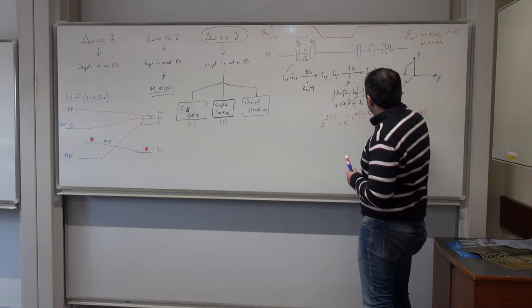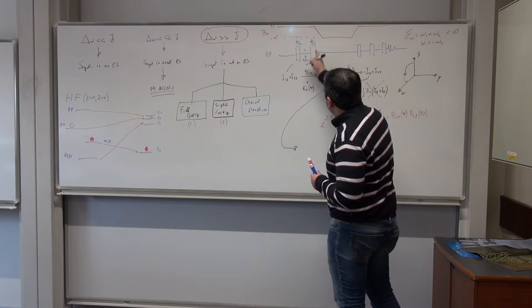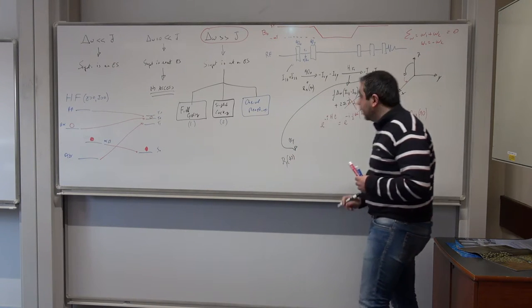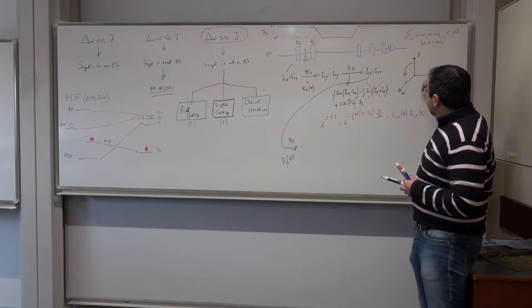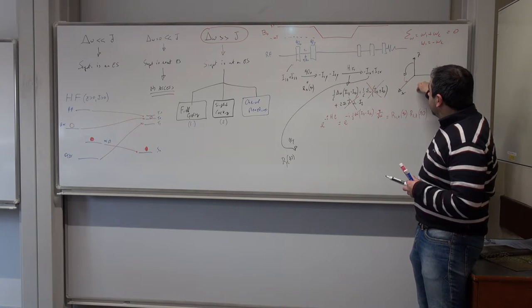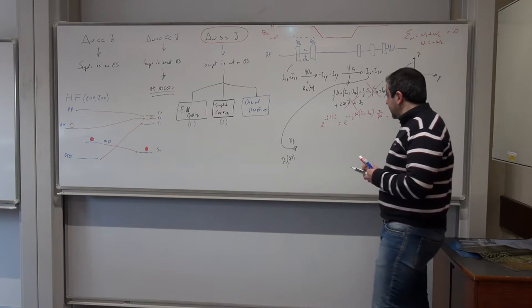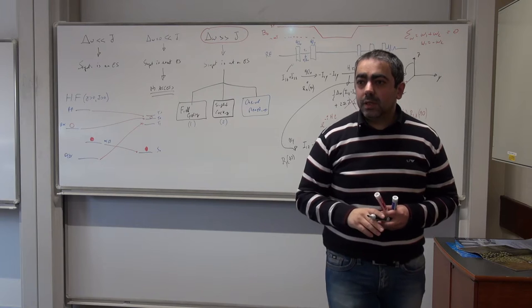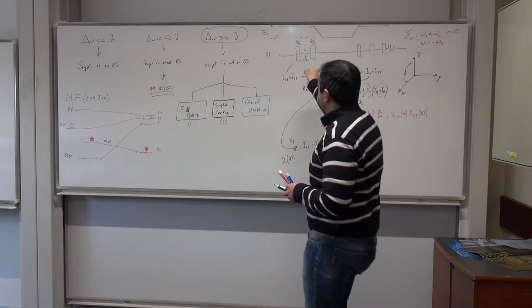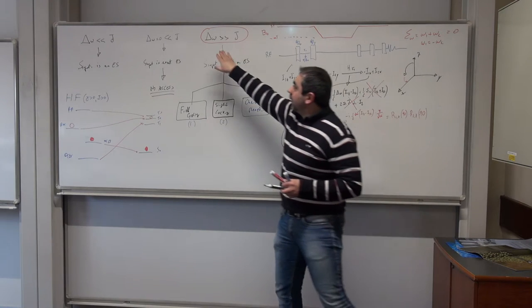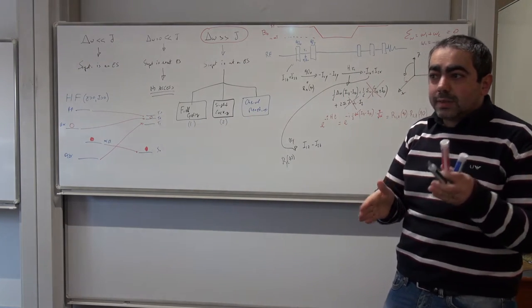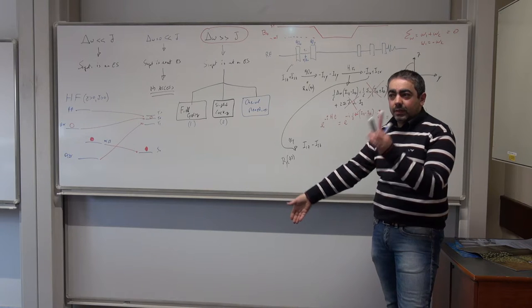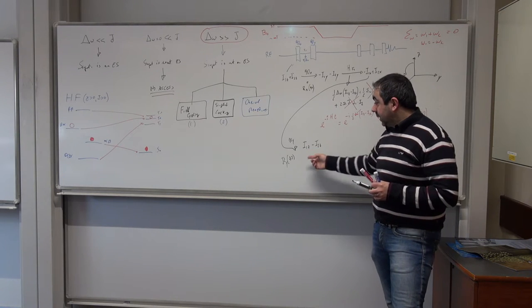Now we apply the 90y pulse — a rotation of 90 degrees around y. Rotating counterclockwise around y, x goes to minus z in one case and plus z in the other. So we get I1z minus I2z. Effectively, this two-pulse sequence, in the approximation where the chemical shift difference is much bigger than J, acts like a selective 180-degree pulse on one of the spins. We have inverted spin 2 magnetization while leaving spin 1 with the same sign.